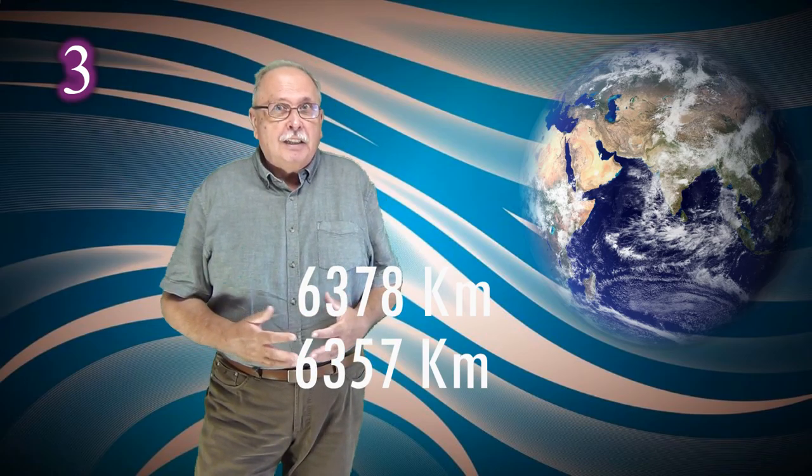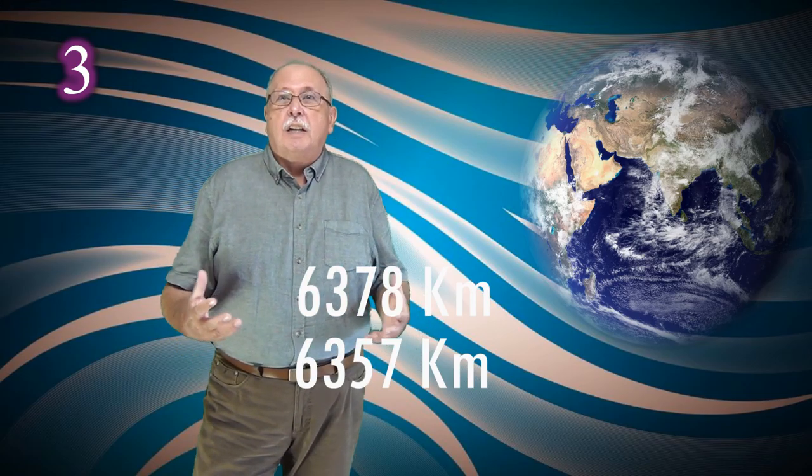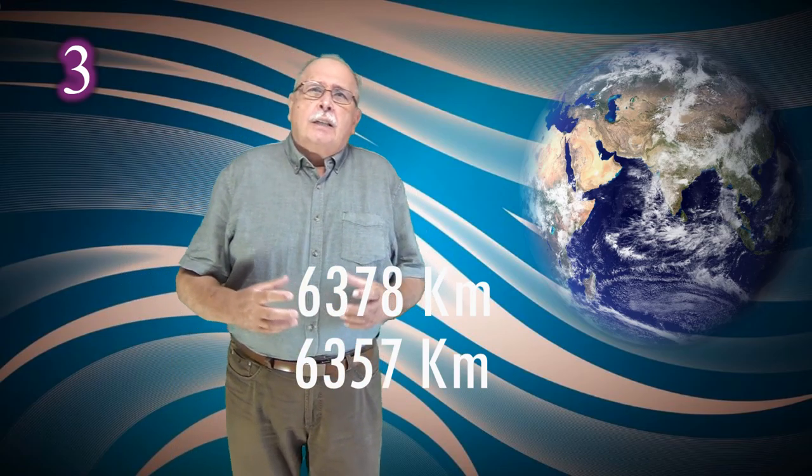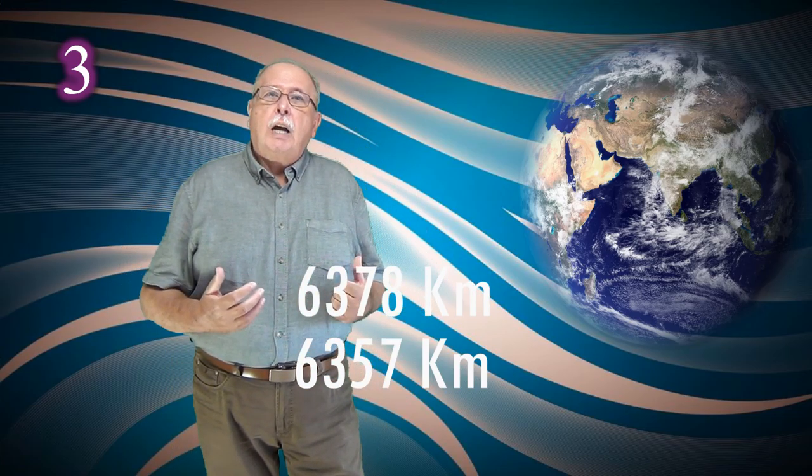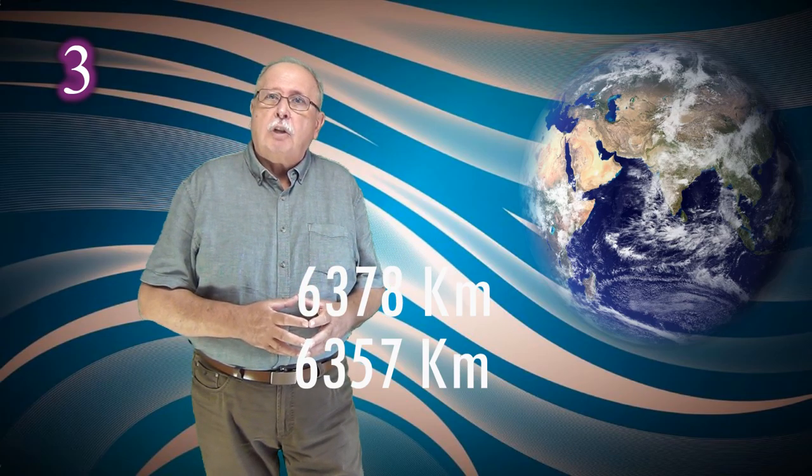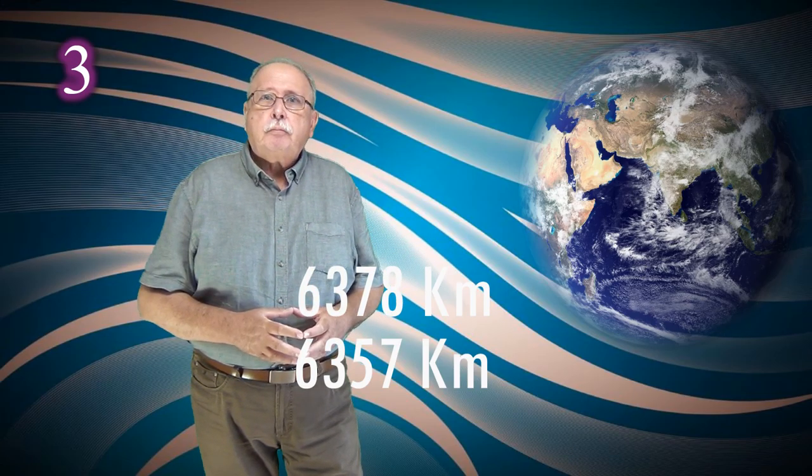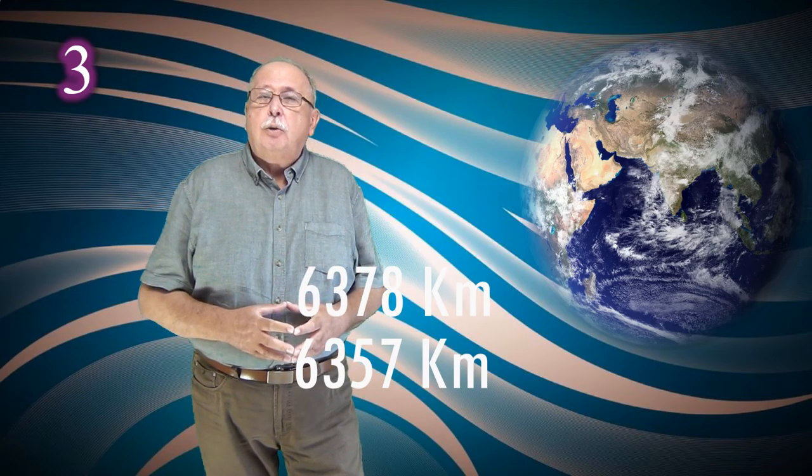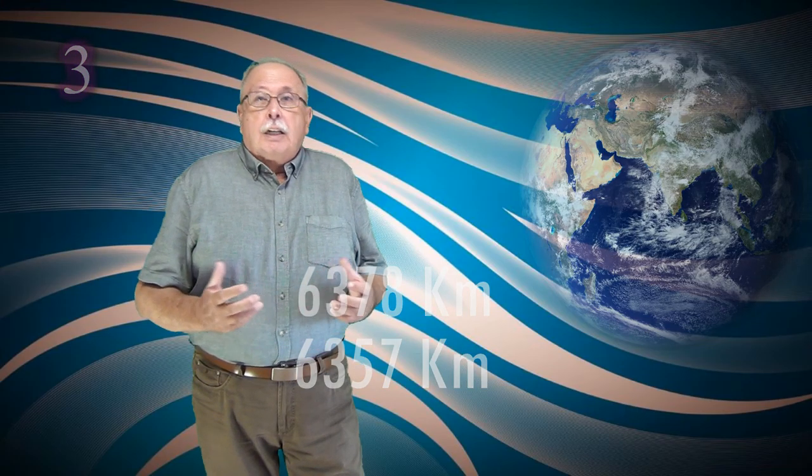Turtirea pământului există, dar este atât de mică încât putem spune liniștit că pământul are formă de sferă, adică este rotund. Că nu este o sferă perfectă? Nici o sferă nu este perfectă. Nu există sferă perfectă pentru simplul motiv că nimic nu este perfect în această lume. De fapt, afirmația că pământul nu este rotund putea foarte bine să intre și la prima categorie a lucrurilor care de fapt se predau la școală, pentru că orice manual de geografie amintește această mică turtire a pământului.